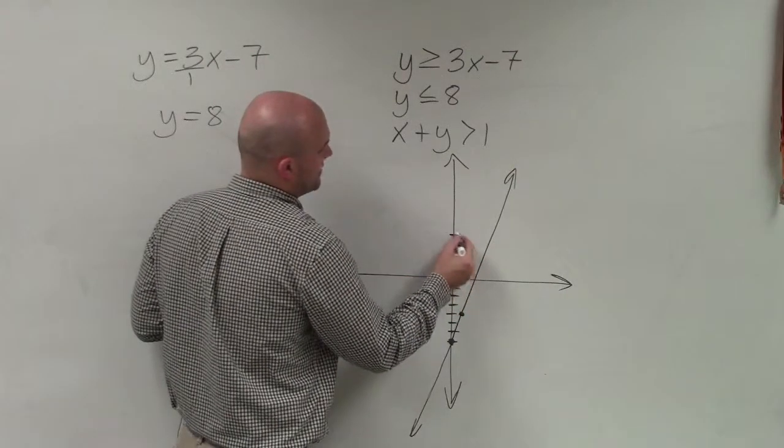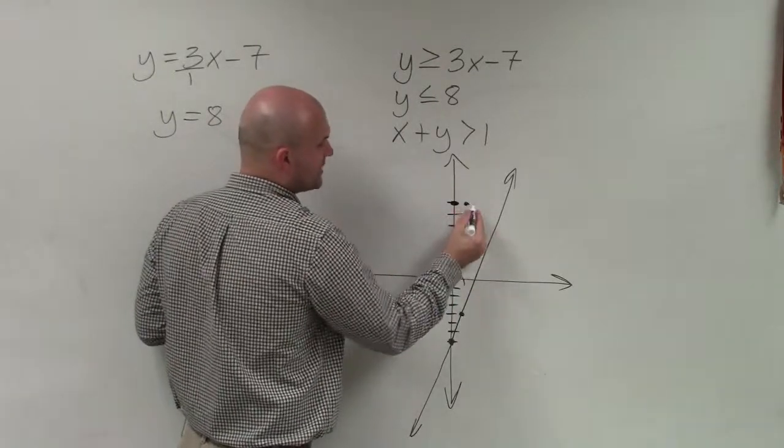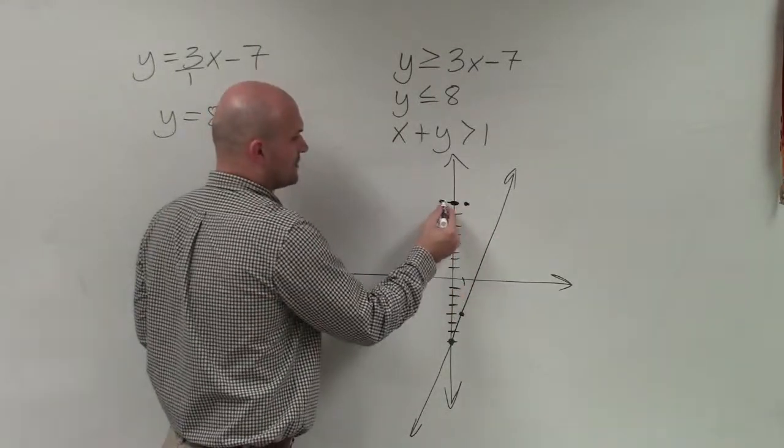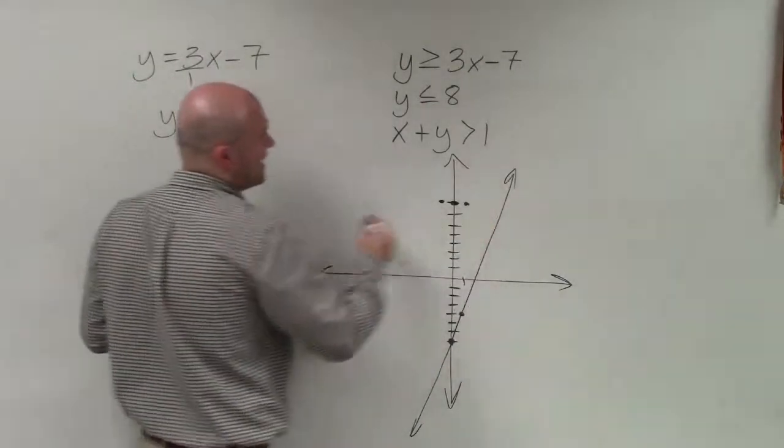So it doesn't matter if x is 0, y equals 8. x is 1, y equals 8. x is negative 1, y equals 8. y always equals 8. So therefore, I'm going to have a horizontal line.